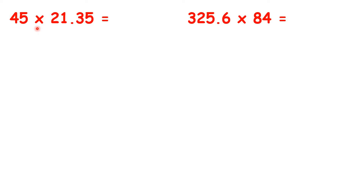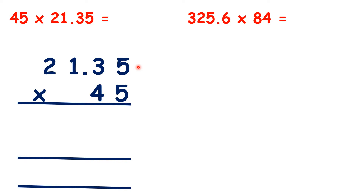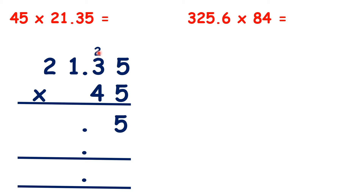Now we need to work out 45 times 21.35. So we can set out our multiplication like this. Again, we don't have our place values lined up, but that doesn't matter, as long as we remember that if there are two decimal places in the question, there will be two decimal places in the answer. So we can write decimal points in our answer lines underneath the decimal point in the question. And then we can just multiply as we normally would if we were doing 2135 times 45. So let's start: 5 times 5 is 25. 3 times 5 is 15 plus 2 is 17.